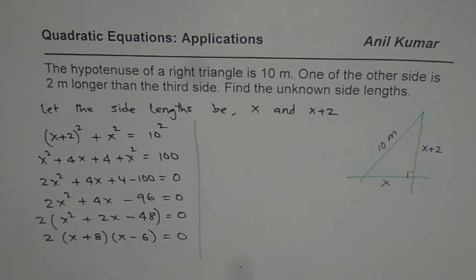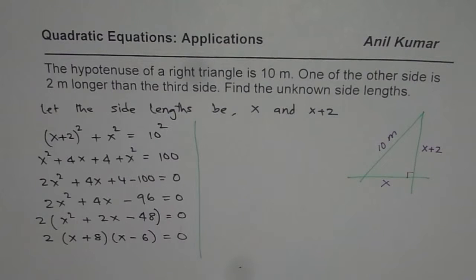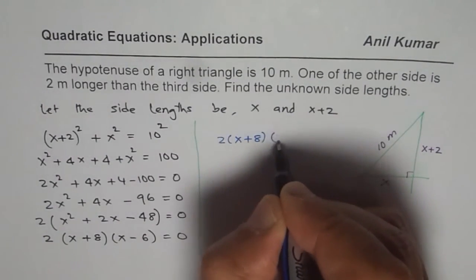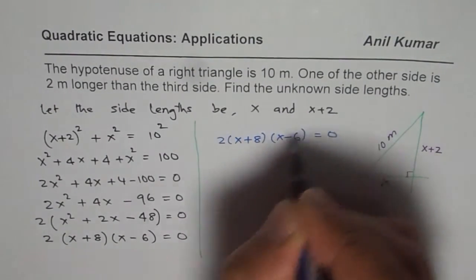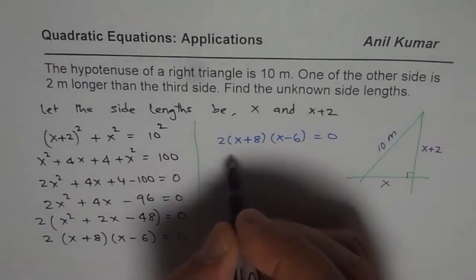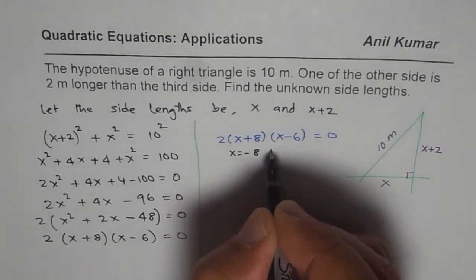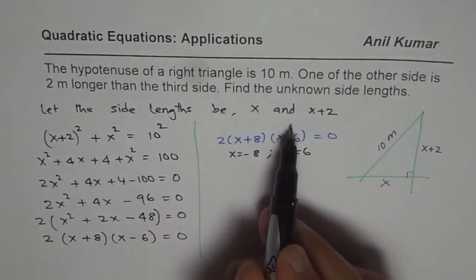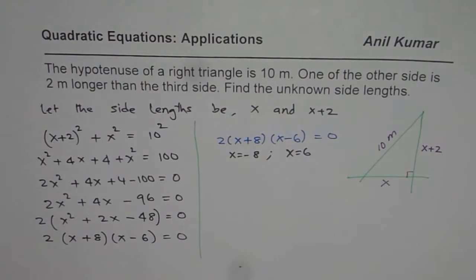That is one way of doing it. The other way is, of course, the quadratic formula, but factoring is easier here, so I prefer factoring. The equation is (x + 8)(x − 6) = 0. That gives us two solutions: x = −8 and x = 6.